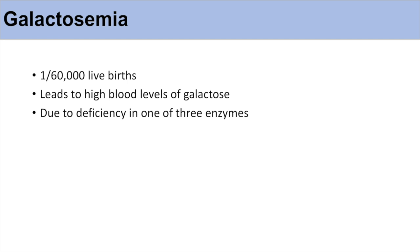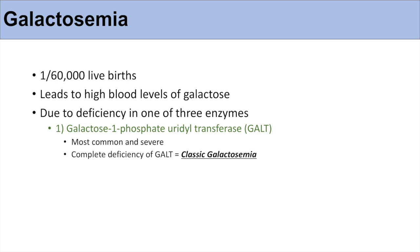Now, galactosemia is due to a deficiency in one of three enzymes. So the first enzyme is galactose-1-phosphate-uridyltransferase, or GALT. And this is the enzyme that is required for the conversion of galactose-1-phosphate to glucose-1-phosphate. Now, if there's a deficiency in this enzyme, it leads to the most common and the most severe galactosemia. And a complete deficiency of this enzyme actually leads to what is known as classic galactosemia.